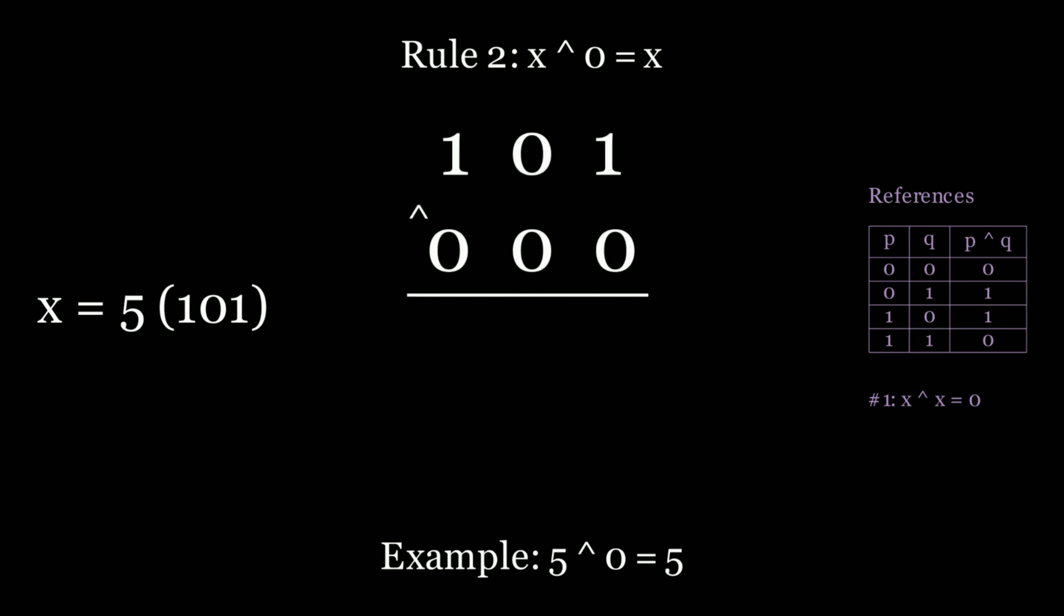So 1 0 1 XOR 0 is equal to 1 0 1 and it's because 1 XOR 0 is 1 and 0 XOR 0 is 0. So no matter what bit you have when you XOR it with 0 you always get back the original bit. Let's keep track of that rule as well on the right hand side.